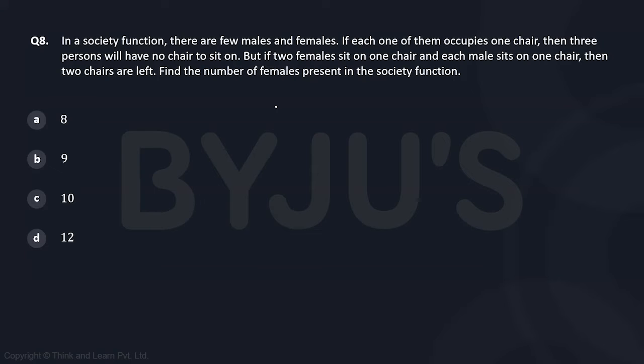In a society function, there are few males and females. If each one of them occupies one chair, then three persons will have no chair to sit down. So if we assume that the total number of chairs at the function